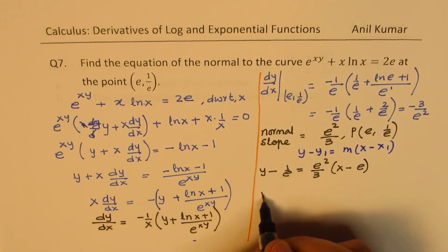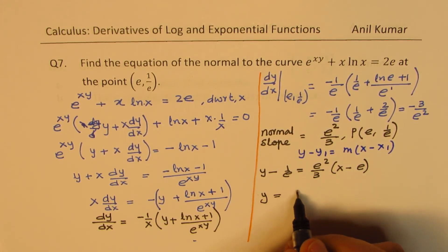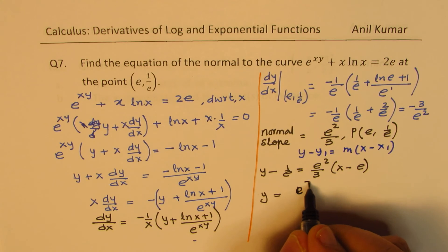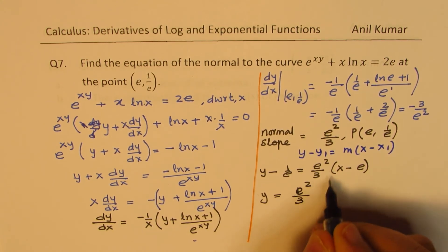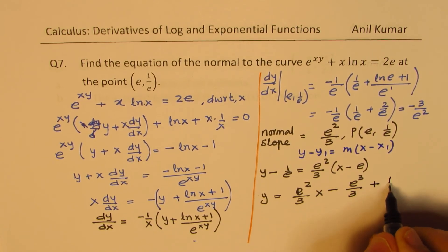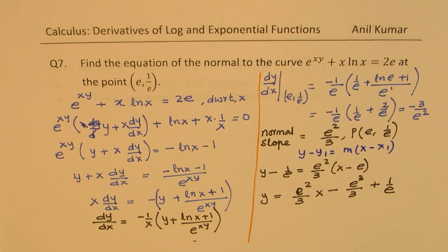Taking this to the right side, we'll rearrange. We should write the x term first. So we get e^2/3 times x minus e^3/3 plus 1/e. That becomes the equation of the normal.